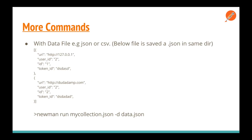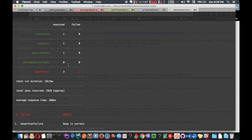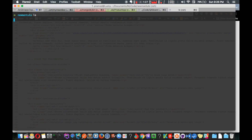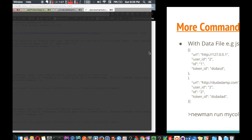Another useful command is the data file flag. Sometimes you have a Postman collection where you use a CSV file as arguments and variables in your request. You can pass a data file using -d followed by your data JSON file path. Make sure the data.json file is in the same directory from which you are running the Newman collection.